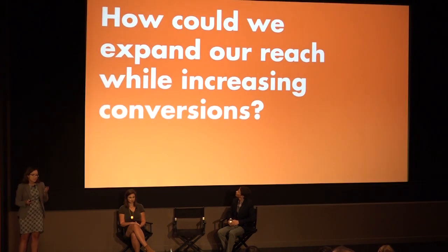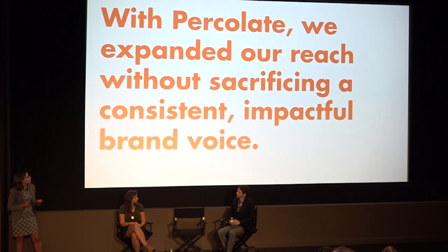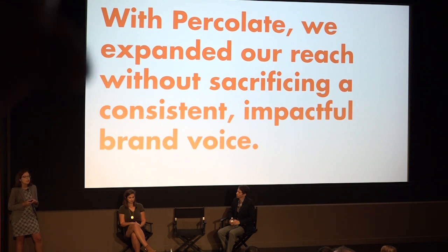So our question was: how can we reach all of those goals, increase all of those conversions, while also connecting with a wider swath of the Parkinson's community? One million people in the United States are living with Parkinson's, and all of those people also have friends and family who very likely are interested in getting involved in the cause as well. With Percolate, we've been able to expand our reach — especially on social media — all while keeping up the same brand voice, which is empathetic but also very intelligent. We really see ourselves as the source for scientific Parkinson's news.